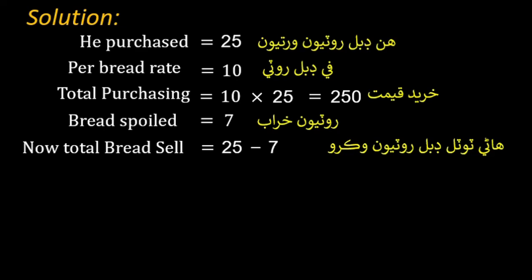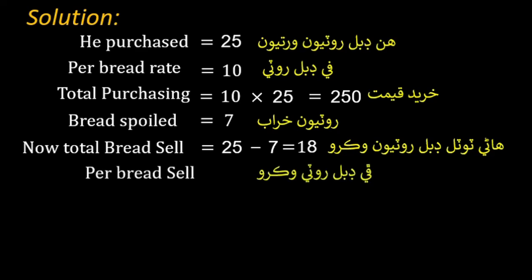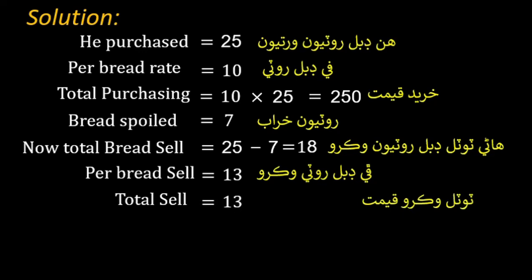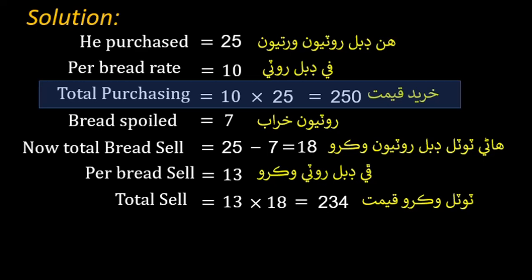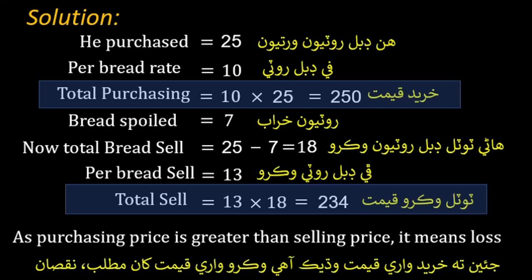7 breads are spoiled, so total breads for sale = 25 − 7 = 18 breads. Selling price per bread is 13 rupees. Total sale = 13 × 18 = 234 rupees.